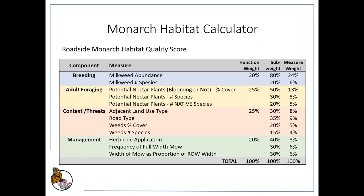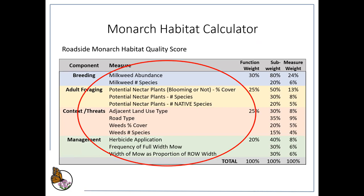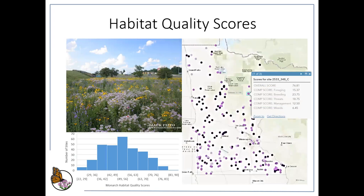The Monarch Habitat Calculator then takes this information and pulls it all together. On the left are the four main habitat components; in the middle are the actual measures that go on the data form or into Survey123; and on the right are the calculations that create the scores. In the end you get a set of scores. At the bottom there's a graph showing overall scores from our Minnesota survey of about 300 sites, and a map where darker dots are higher values. Pop-up windows show information for each dot, including overall score and component scores.